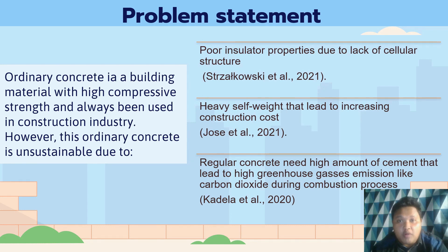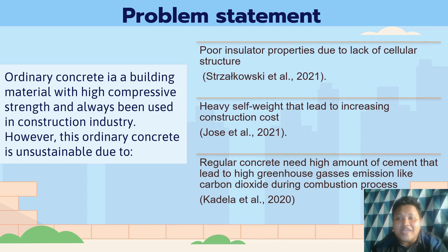Now we look at the problem statement. Ordinary concrete is a building material with high concrete strength that has dominated the construction industry. However, ordinary concrete is unsustainable due to poor insulator properties caused by a lack of cellular structure and heavy self-weight, leading to increasing construction costs. It also requires a high amount of cement, causing high greenhouse gas emissions like carbon dioxide during the combustion process.